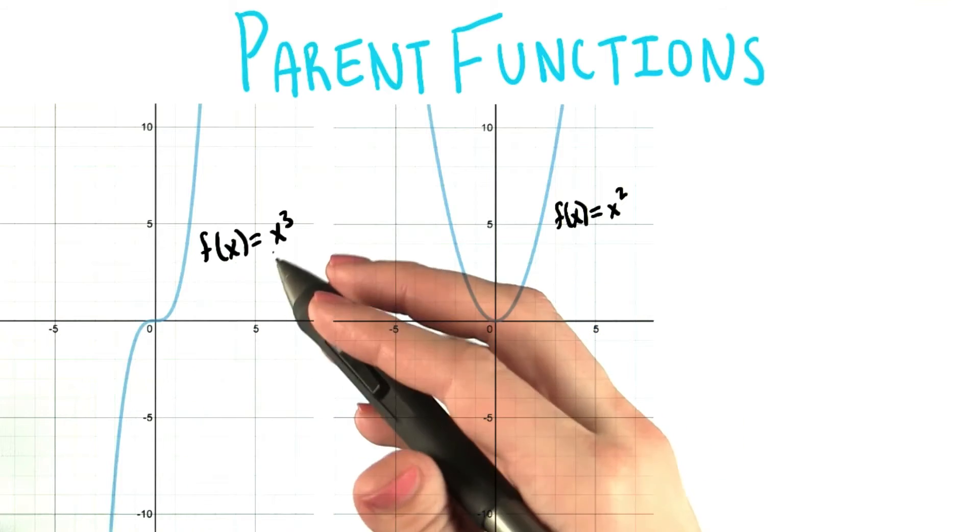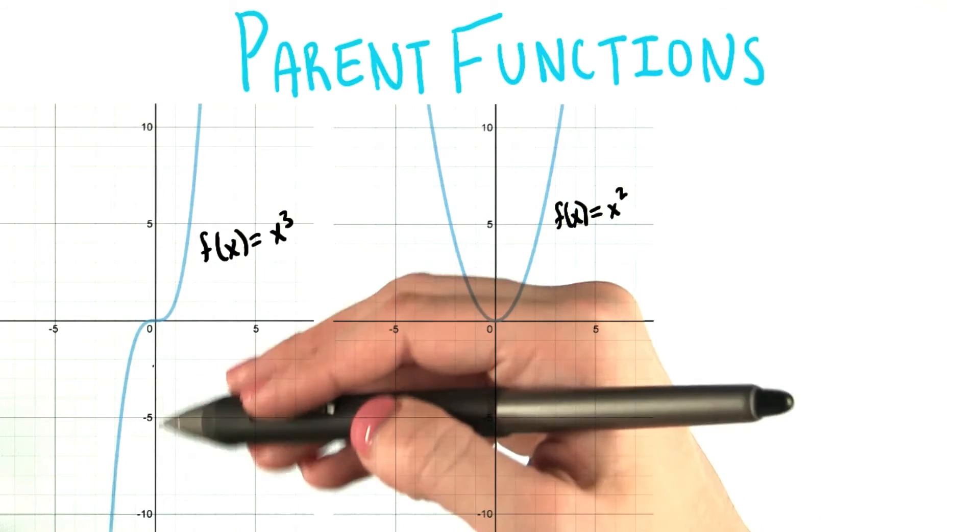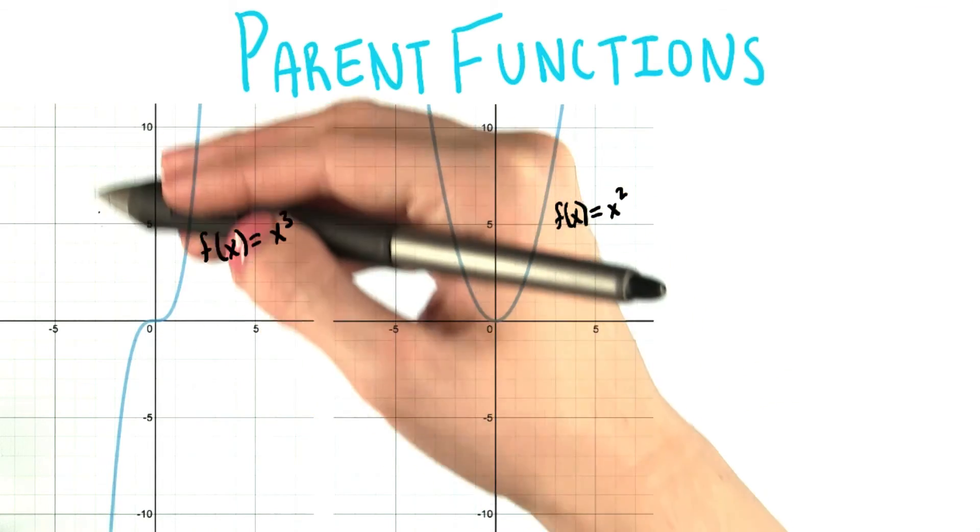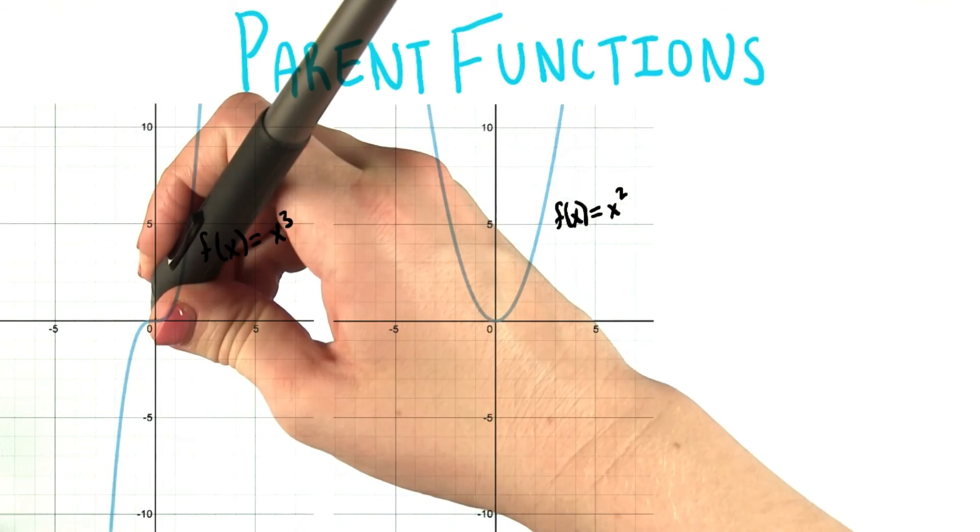That's not the case over here with x cubed. If we simply fold this graph in half down the y axis, this right side is not going to end up looking just like the left side. It'll look more like this. Not the same.